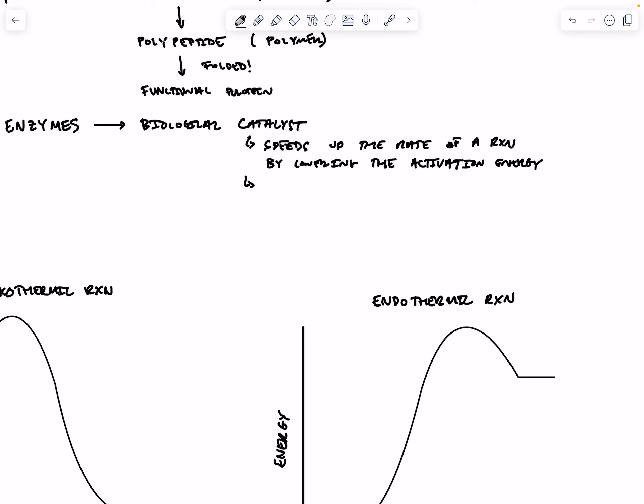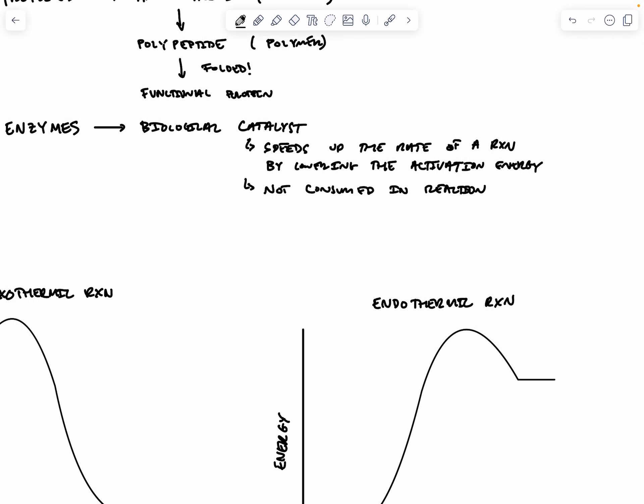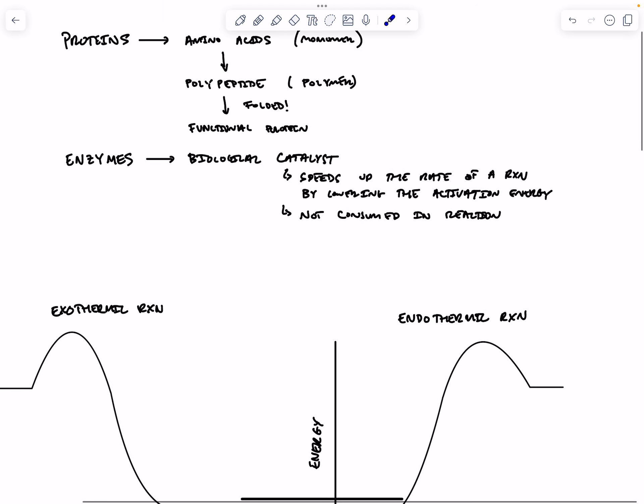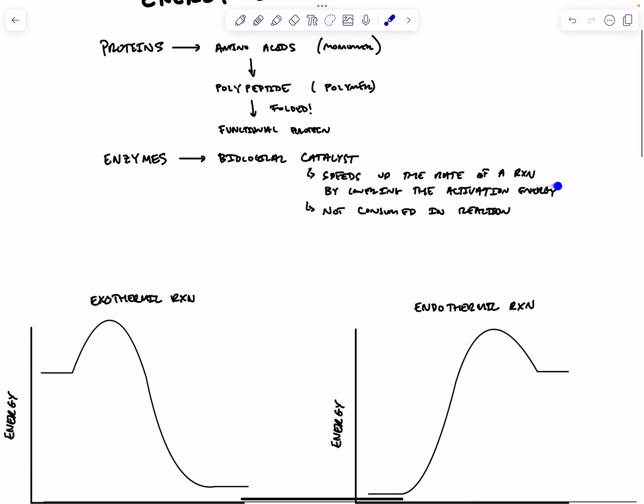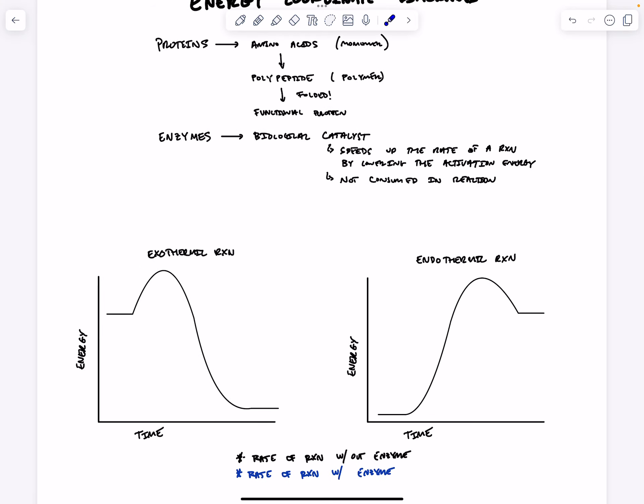The other thing that is always true of a catalyst is that it's not consumed in the reaction. In a typical reaction, we have reactants that are converted to products. Over time, we use up all the reactants as they're converted to product. But a catalyst is not going to be consumed. It can be used again and again. We call enzymes biological catalysts because they speed up the rate of reaction, lower the energy of activation, and are not consumed in the reactions they catalyze.